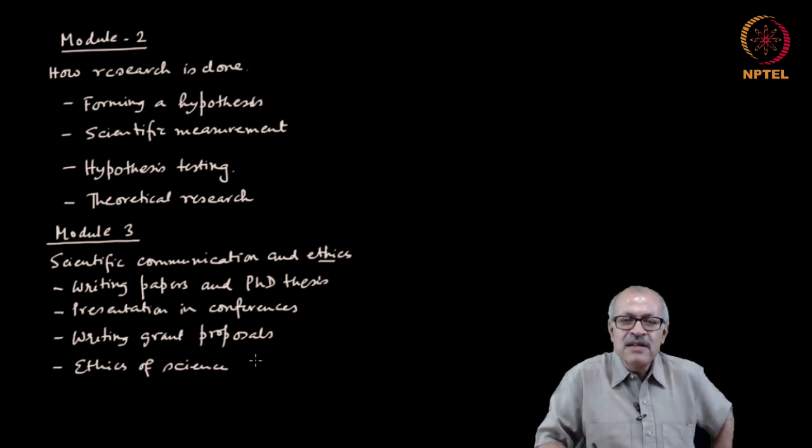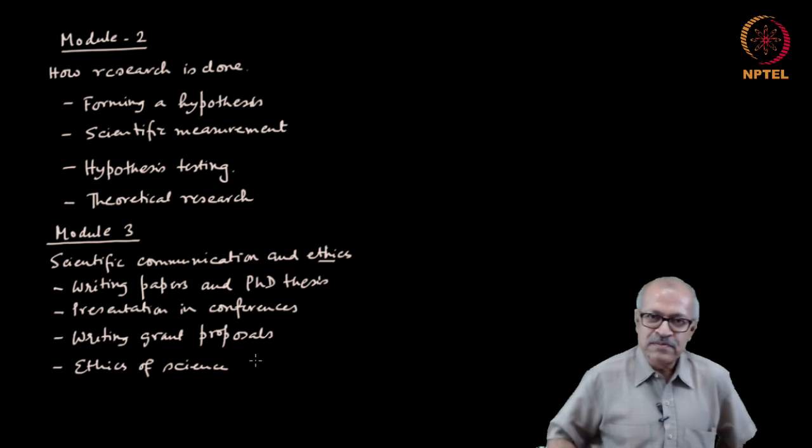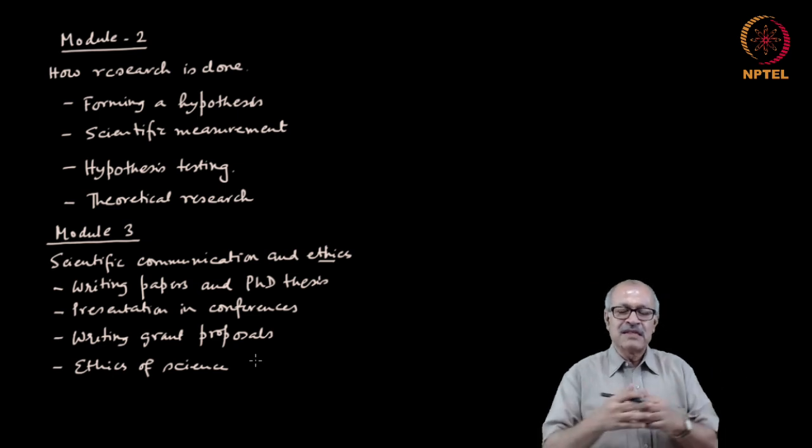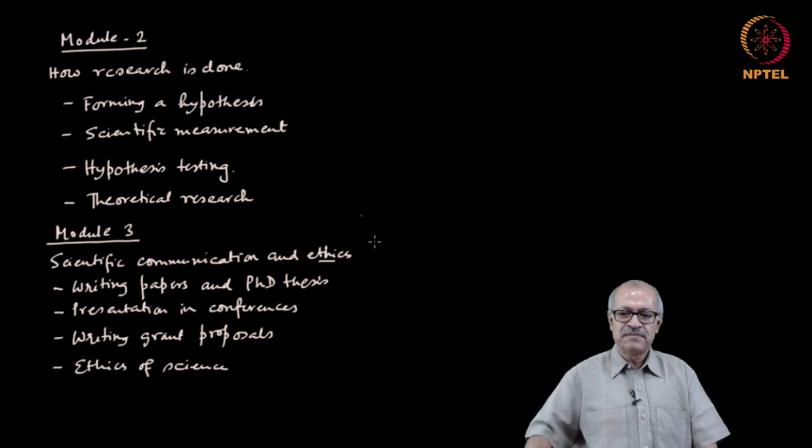So this is more or less the content of the course. We will go through these step by step in three modules. With that brief introduction, let us come to the subject matter proper. What is the objective of science? The objective of science is to find out the character, properties, and the laws governing the things we find in nature. That is essentially the objective of science.